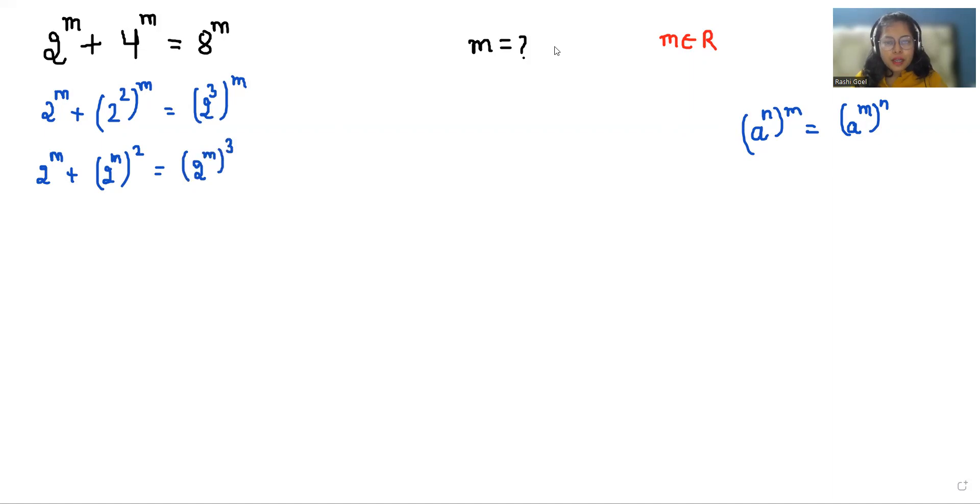So now let's make a substitution. Let 2^m = x. So it becomes x + x² = x³. If I take all terms together, it becomes x³ - x² - x = 0.